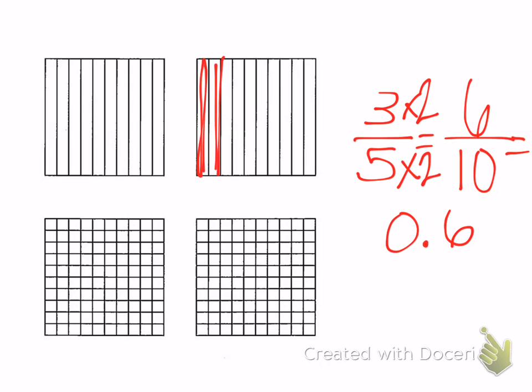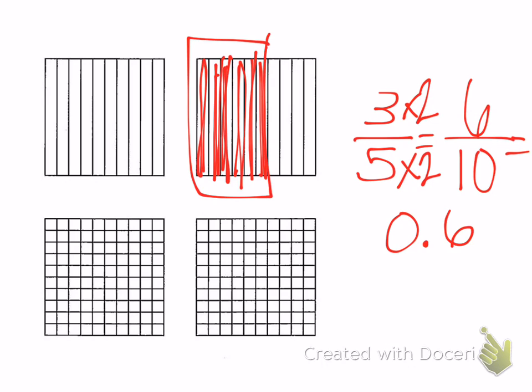And I use my bars to show me that there's three, four, five, six. Six of the ten are shaded, so six-tenths are shaded.